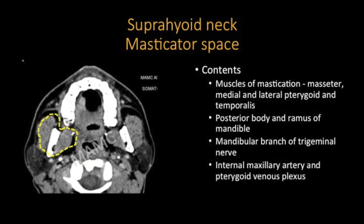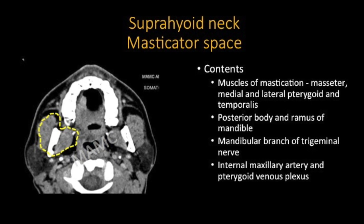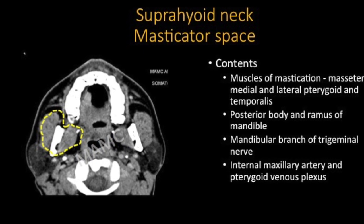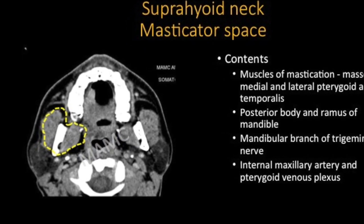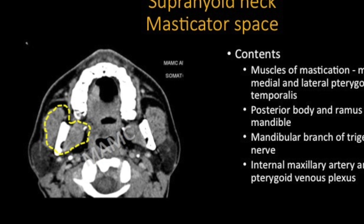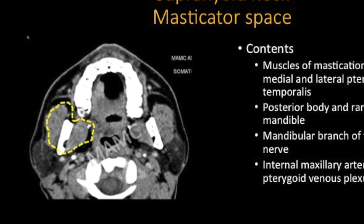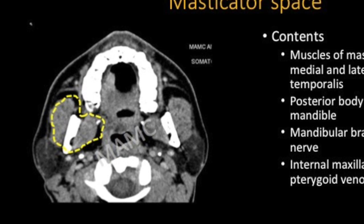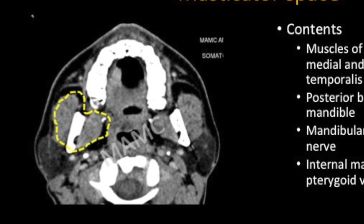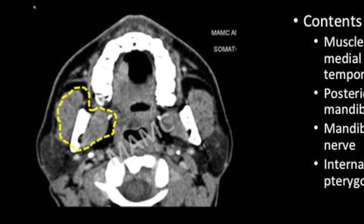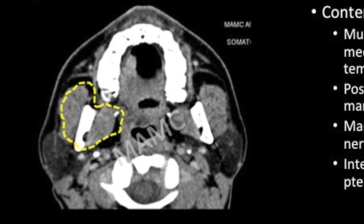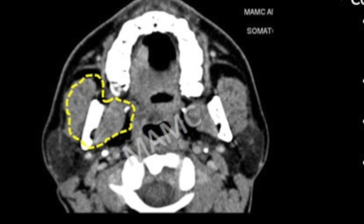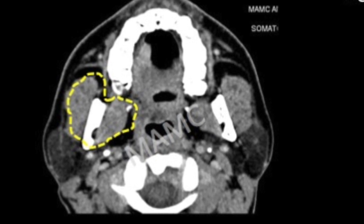The masticator space is enclosed by the superficial layer of deep cervical fascia. The structures enclosed by this layer are the muscles of mastication — the masseter, the medial and lateral pterygoids, and the temporalis — the posterior body and ramus of mandible including the temporomandibular joint, and the mandibular branch of the trigeminal nerve running in the inferior alveolar canal within the mandible. The vascular structures here are branches of the internal maxillary artery and the pterygoid venous plexus.